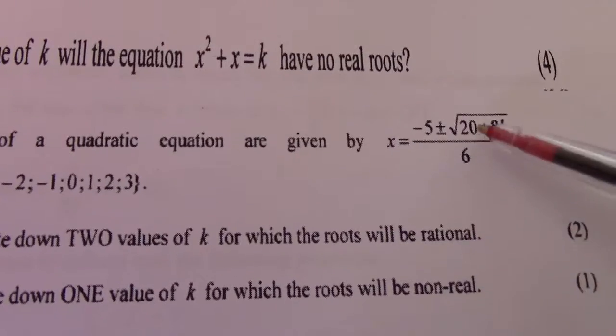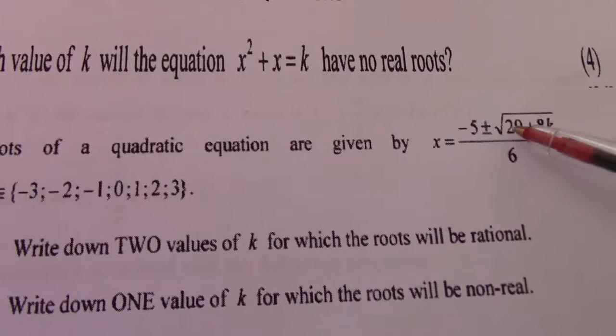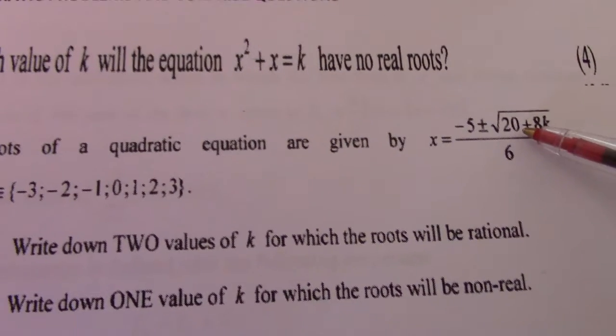Now they must be rational, meaning they must be perfect squares. So minus 2, 20 minus 16 gives me square root 4 which is a perfect square.